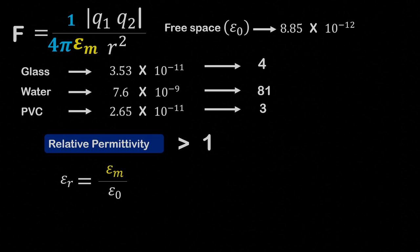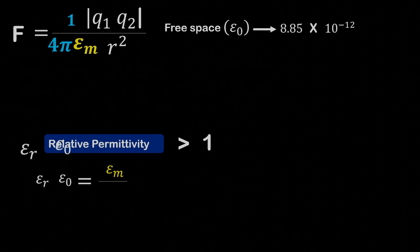We can use the formula of relative permittivity to express the permittivity of a medium as epsilon r times epsilon 0.